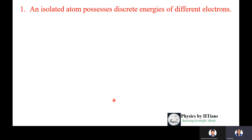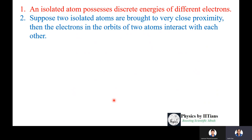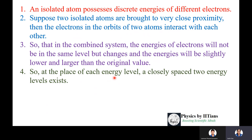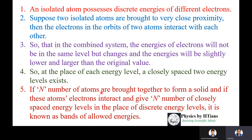An isolated atom possesses discrete energies for different electrons. When two isolated atoms are brought to very close proximity, the electrons in the orbits of both atoms interact, so in the combined system energies will be slightly lower and larger than the original value — giving two closely spaced energy levels. If N atoms are brought together to form a solid, their electrons interact and produce N closely spaced energy levels in place of discrete energy levels, forming a band of allowed energies.